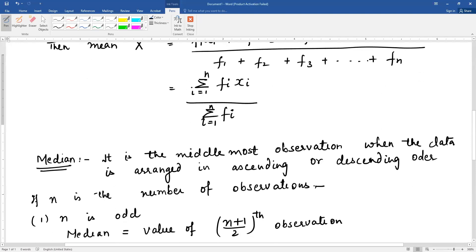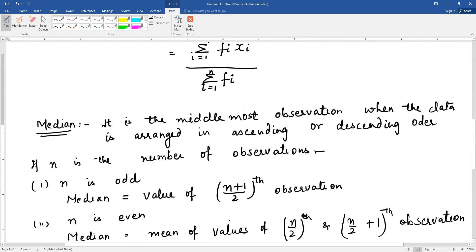Now next is median. We'll take an example to understand mean as well, but first let's do the definitions. Median: it is the middlemost observation when the data is arranged in ascending or descending order. That means the raw data you're given, first arrange the observations in ascending order by value, and then the middlemost observation is called the median.